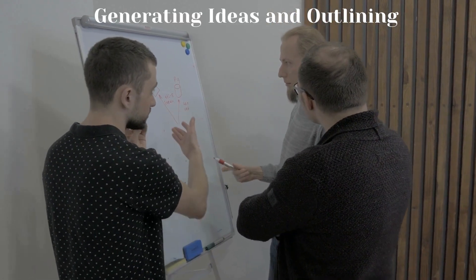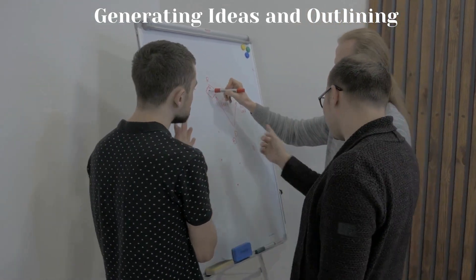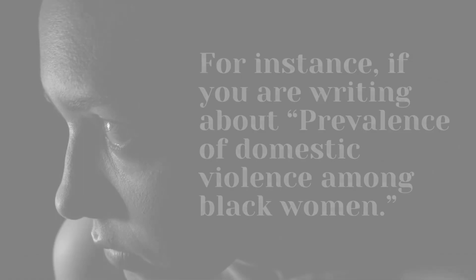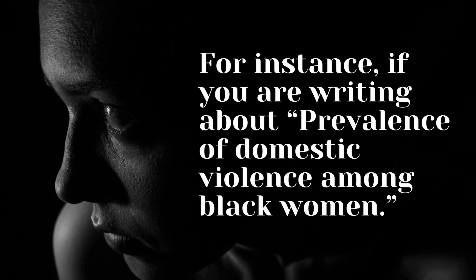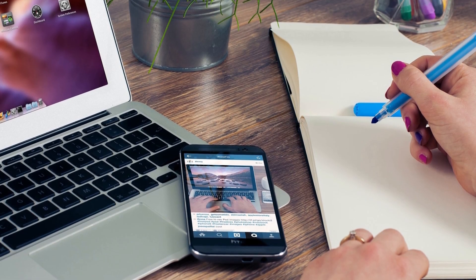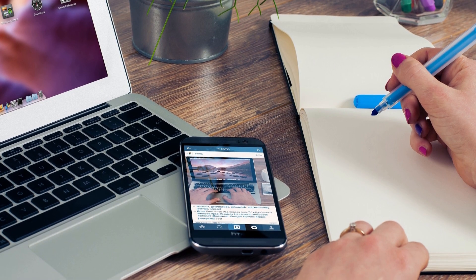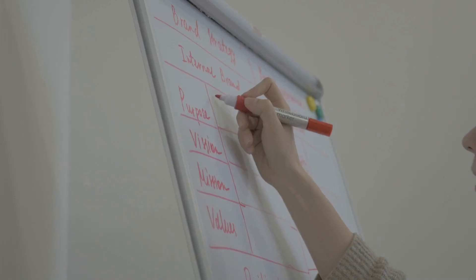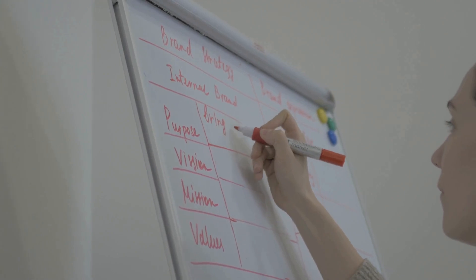Generating ideas and outlining. It is necessary to prepare for your research paper before you delve into writing. ChatGPT can be a fantastic tool for brainstorming. For instance, if you are writing about prevalence of domestic violence among black women, first ask a few questions to ChatGPT like: what is domestic violence? How does domestic violence affect black women? What is the enormity of domestic violence among black women in the USA? Note down the answers and make a rough note of every information and data. These generated ideas can serve as the foundation for your outline — organize them into main points and sub-points, creating a roadmap for your research paper.